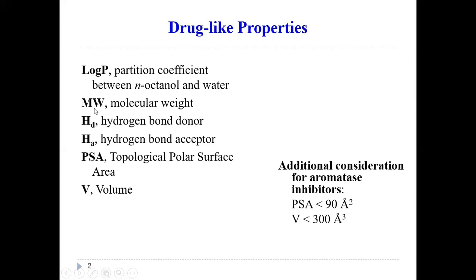We want the molecule to be relatively small so that it fits in the body better. Then we also have hydrogen bond donor, H sub D, and hydrogen bond acceptor, H sub A. Hydrogen bond donor is anything that has a hydrogen directly attached to an electronegative atom — an NH or an OH type hydrogen — because that is more likely to create a strong hydrogen bond. And then hydrogen bond acceptor is those free electronegative atoms: oxygens and nitrogens that are not bonded to hydrogens inside your molecule, and those are much more likely to accept a hydrogen bond.